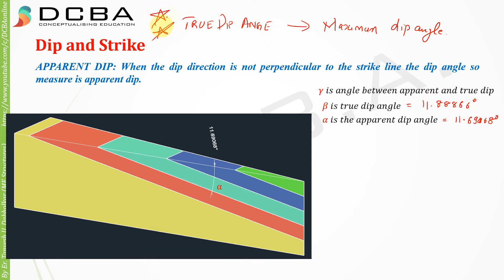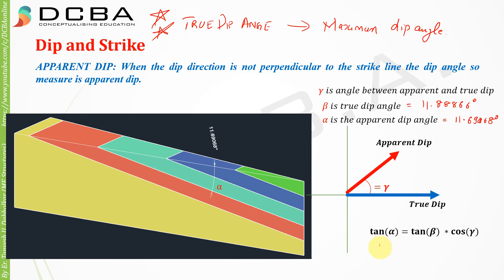There is a relation between these three values: tan α = tan β · cos γ. If you have the true dip value (β) and the angle gamma (γ) between apparent and true dip, you can find the apparent dip angle (α). Conversely, if you know the apparent dip and gamma, you can find the true dip. This is a very important equation.